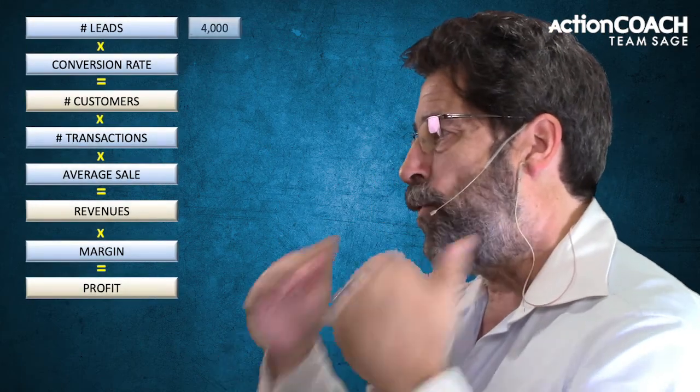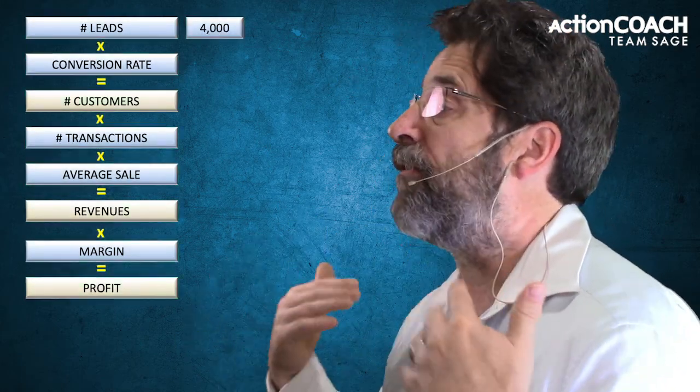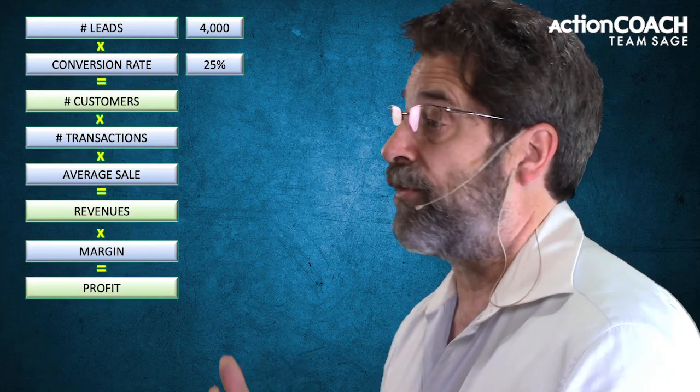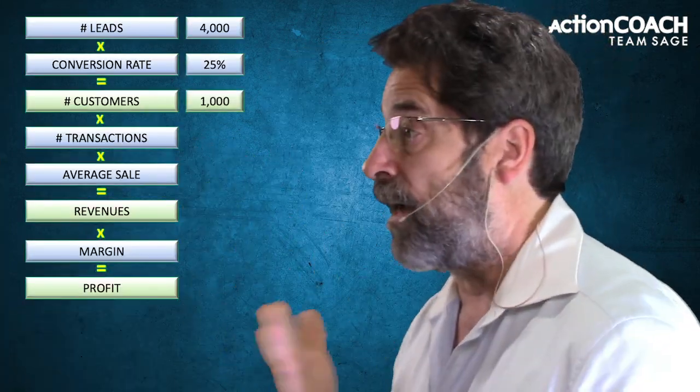Let me throw in some numbers so you can get an idea of what I mean. If you have 4,000 leads and a 25% conversion rate, that means 25% of the 4,000 leads would become customers — giving you 1,000 customers.